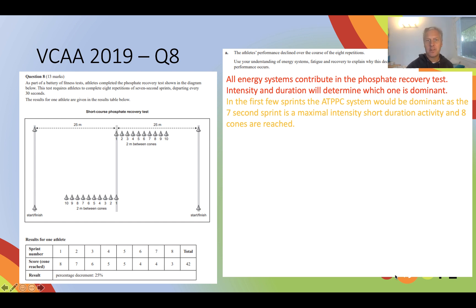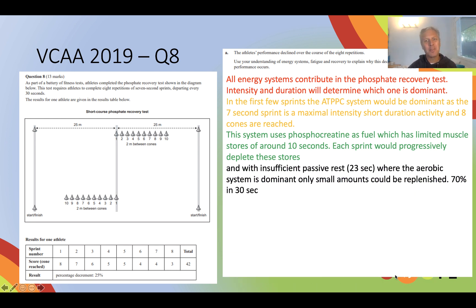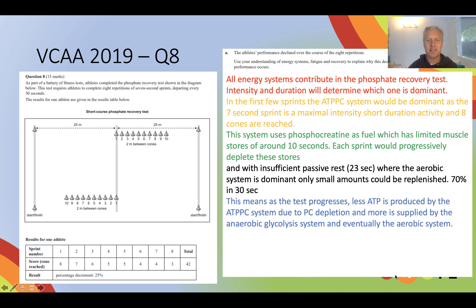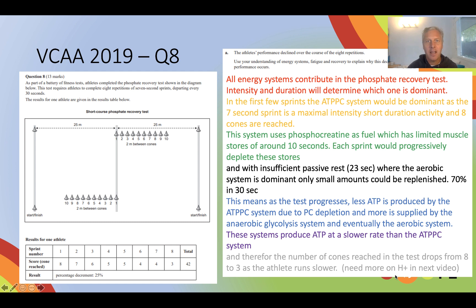For that first seven second sprint, it's most definitely a high intensity, short duration sprint — eight cones reached — because we're using our fastest energy system, the ATP-PC system. But we've only got a limited supply in the muscle, and 23 seconds of passive rest won't be enough to replenish all of our PC stores. So as we go through this test, we deplete our PC and get more and more contribution from the anaerobic glycolysis system, and indeed the aerobic system towards the end. These systems produce ATP at a slower rate than the ATP-PC system, therefore we slow down and reach fewer and fewer cones.